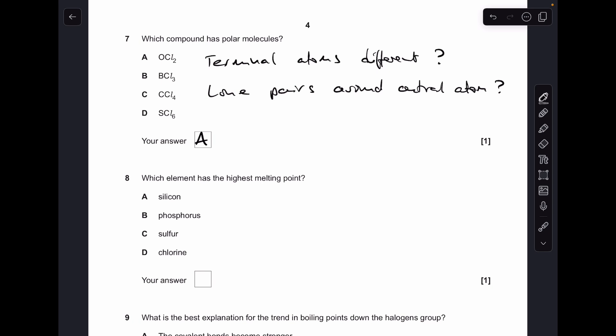Number 8 is all down to the type of structure. So silicon's got a giant covalent structure, all the others are simple covalent structures. What have you got to break to melt a giant covalent structure? Covalent bonds between the atoms, which takes a lot of energy, so silicon has the highest melting point. We're just breaking relatively weak London forces between molecules in the other three.